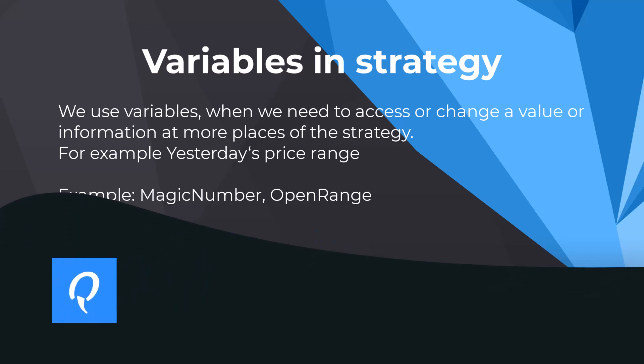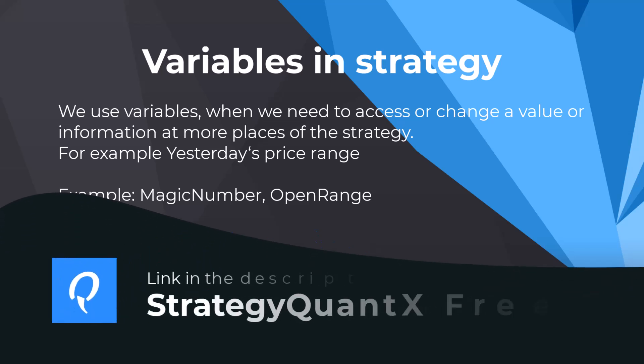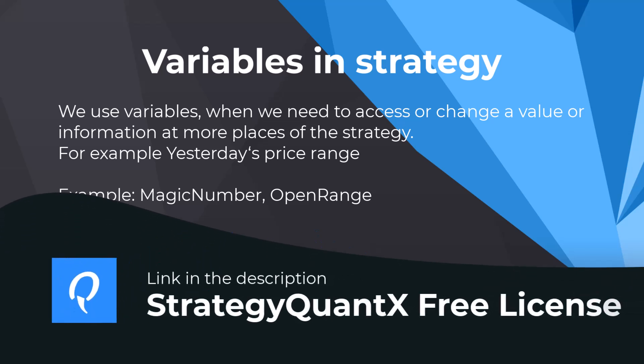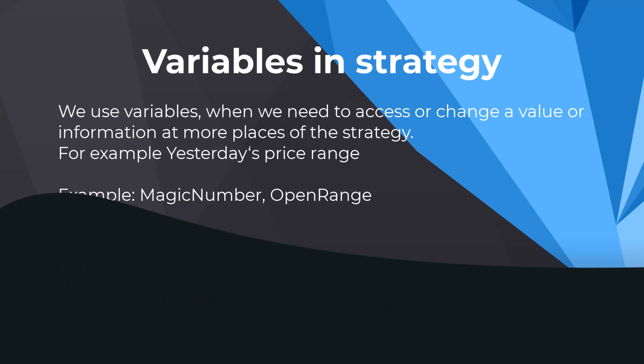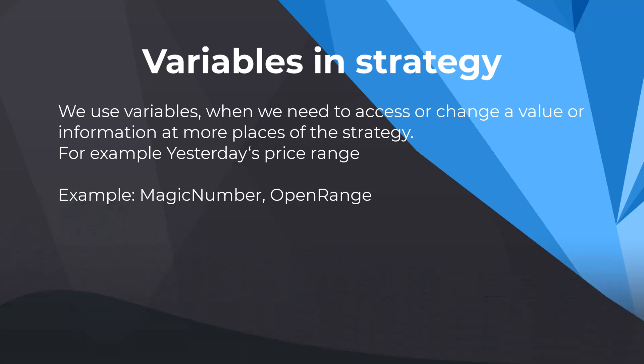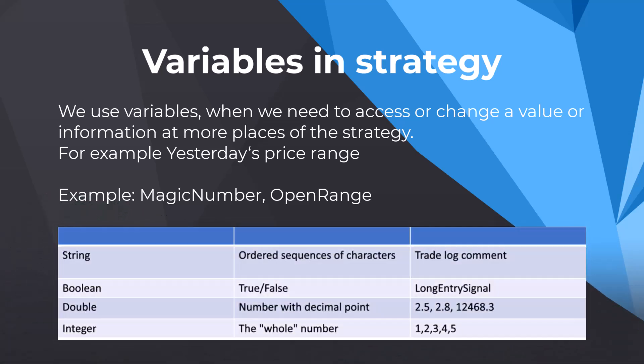Basically, a variable is information — very simply put, a kind of category where we put a value, let's say number 10. Every time and everywhere we look at this category, it always has the value we set, so 10.